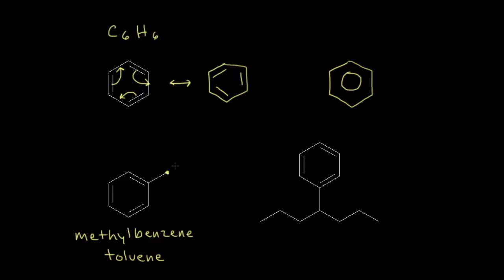What happens if your alkyl group has more carbons than your benzene ring? In that situation, we name the molecule as an alkane and name the benzene ring as a substituent. So a seven-carbon alkane is heptane, and a benzene ring as a substituent — C6H5 — is called a phenyl group. A phenyl group coming off carbon 4 gives us 4-phenylheptane as the IUPAC name.